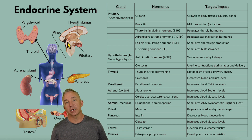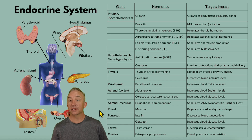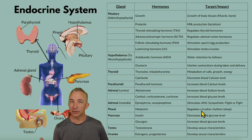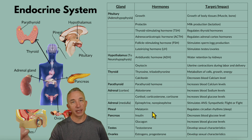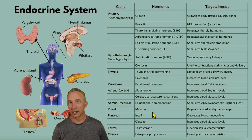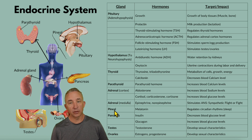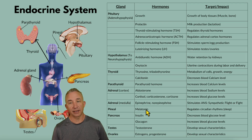The pineal gland, located on the posterior side near the thalamus, secretes melatonin. Melatonin regulates our circadian cycle — our sleep-wake cycle — telling us when it's time to wake up and when it's time to sleep, based on light exposure. This hormone increases at night to support sleep. Some people take synthetic melatonin to improve sleep. The circadian rhythm regulated by the pineal gland can be disrupted by daylight saving time changes.